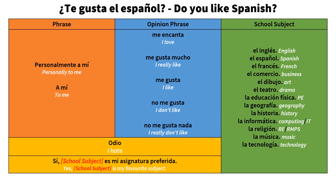There are some other options in the yellow boxes. For 'I hate something', you say Odio. For example, Odio el español. Or, if you're asked ¿Te gusta el español?, you might want to say that yes, Spanish is my favourite subject. In Spanish you would say: Sí, el español es mi asignatura preferida — asignatura preferida.